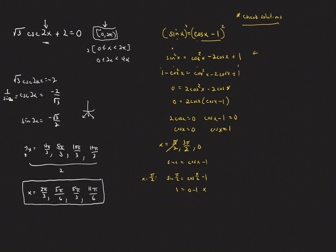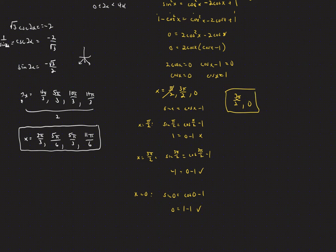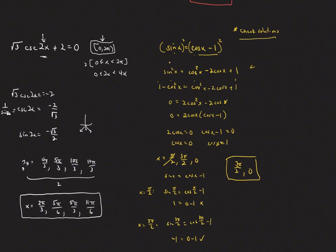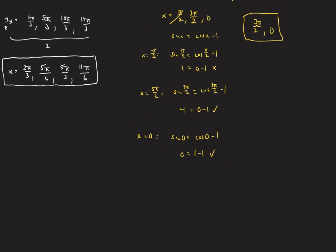Checking 3 pi over 2: sine(3π/2) is negative 1, and cosine(3π/2) minus 1 is also negative 1 — this checks out. Checking x equals 0: sine(0) is 0 and cosine(0) minus 1 is also 0 — this also works. So our final solutions are x equals 3 pi over 2 and x equals 0. The key steps throughout were squaring both sides, replacing a squared term using a Pythagorean identity, factoring, solving, and then checking solutions at the end.